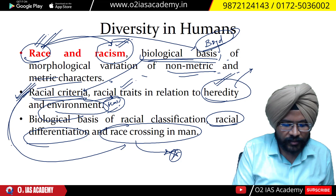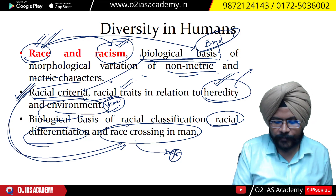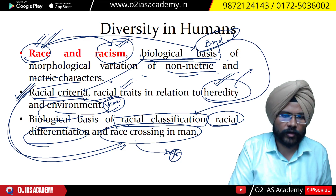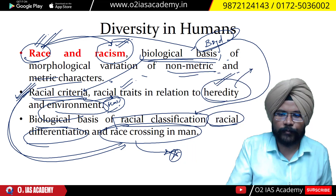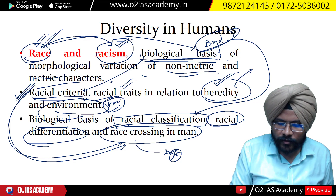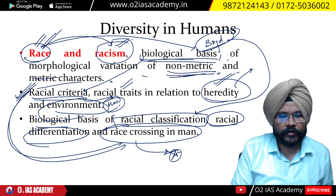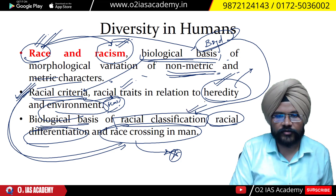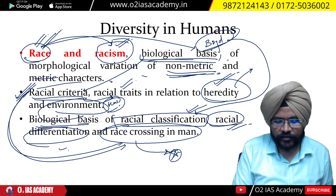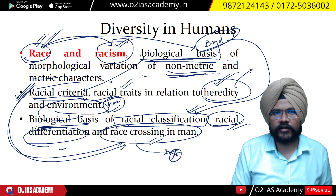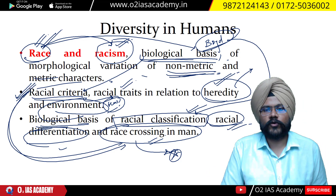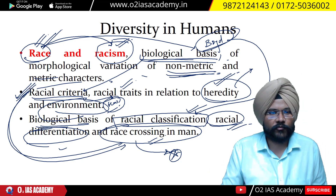After racial criteria, you study the biological basis of racial classification — again replicating Boyd's concepts and studying them more through the application process. The metric and non-metric characteristics are used here. Then comes racial differentiation and racial crossing. Galton had a student known as Davenport, who conducted racial crossing studies in Zimbabwe — known as mulatto studies.